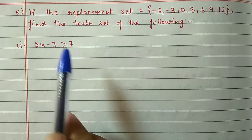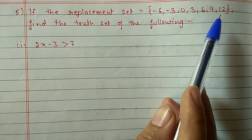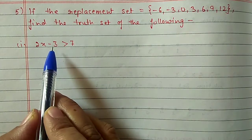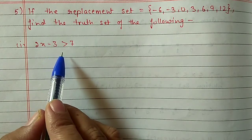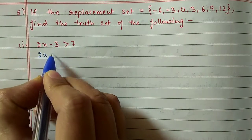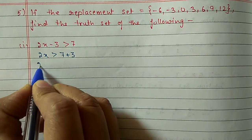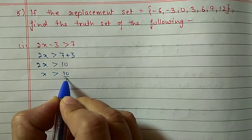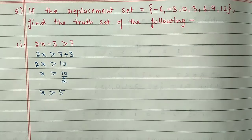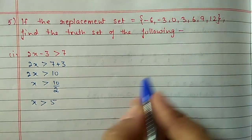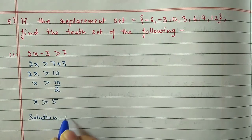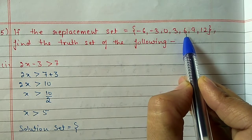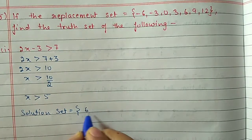Question 5: Replacement set is {-6, -3, 0, 3, 6, 9, 12}. Find the truth set (solution set). First inequation: 2x minus 3 greater than 7. Shift minus 3: 2x greater than 10, so x greater than 5. From the replacement set, numbers greater than 5 are 6, 9, and 12. Solution set is {6, 9, 12}.